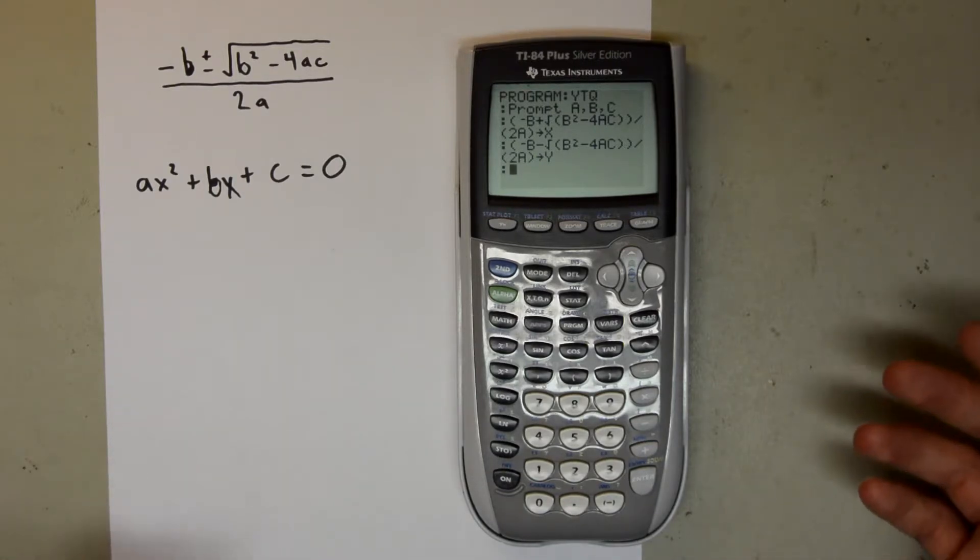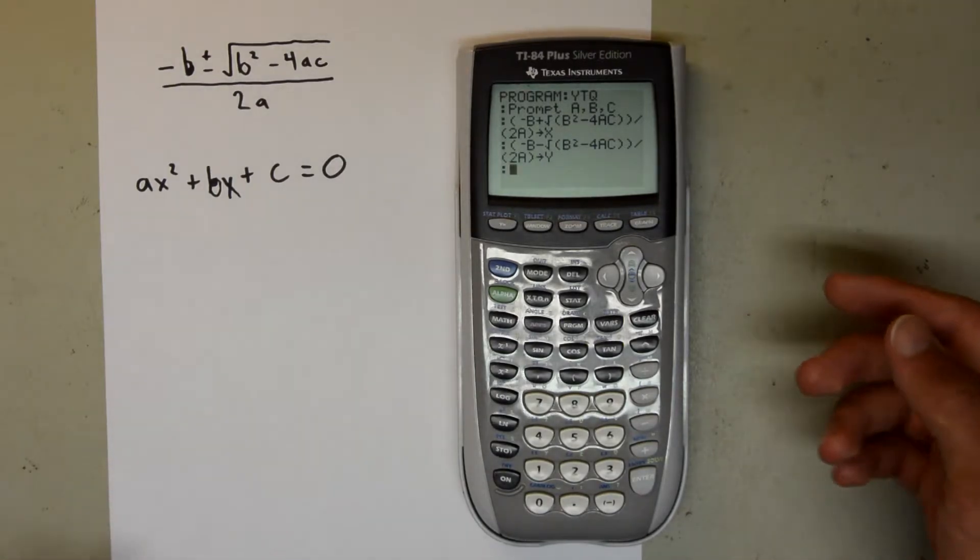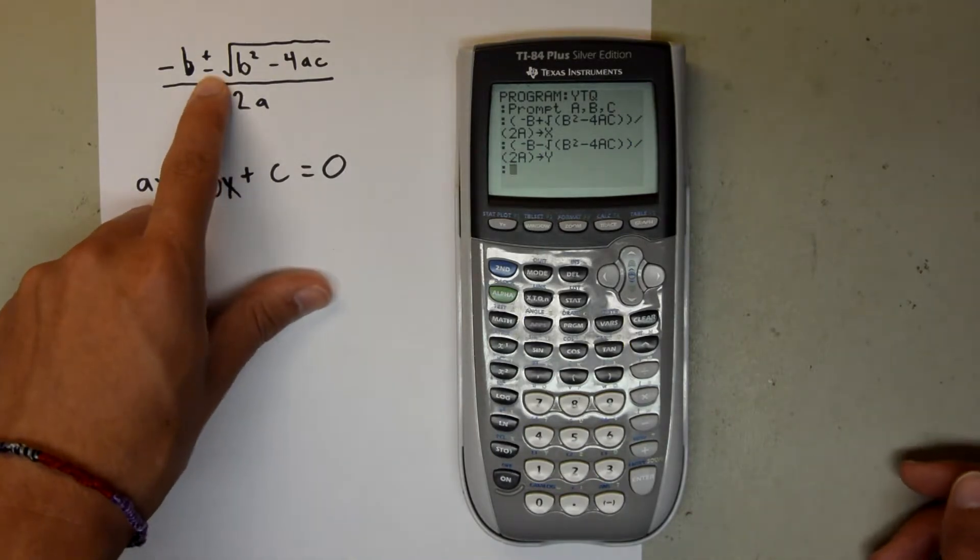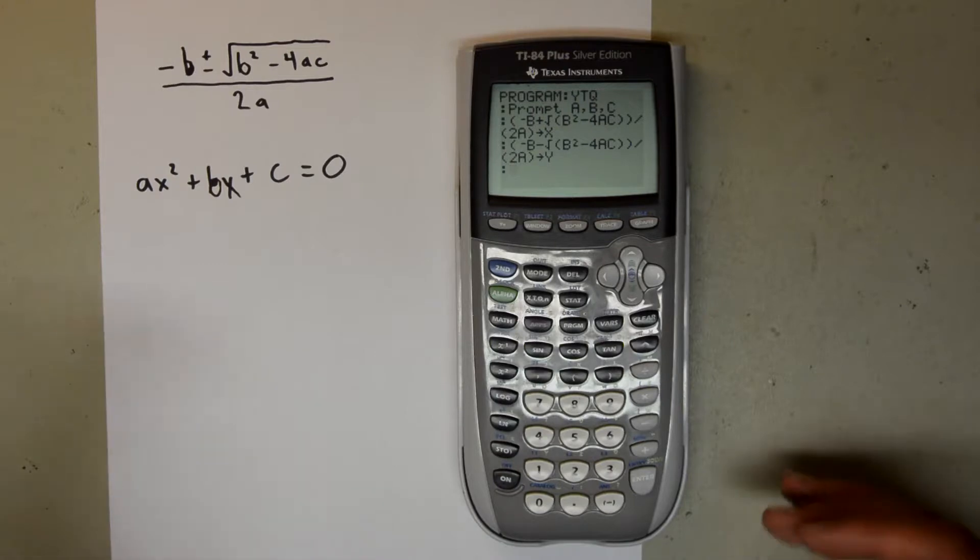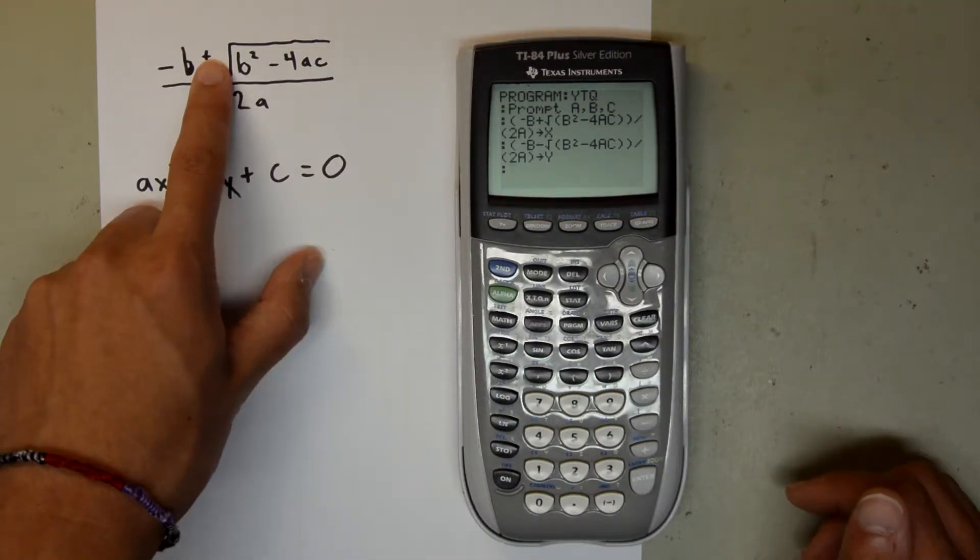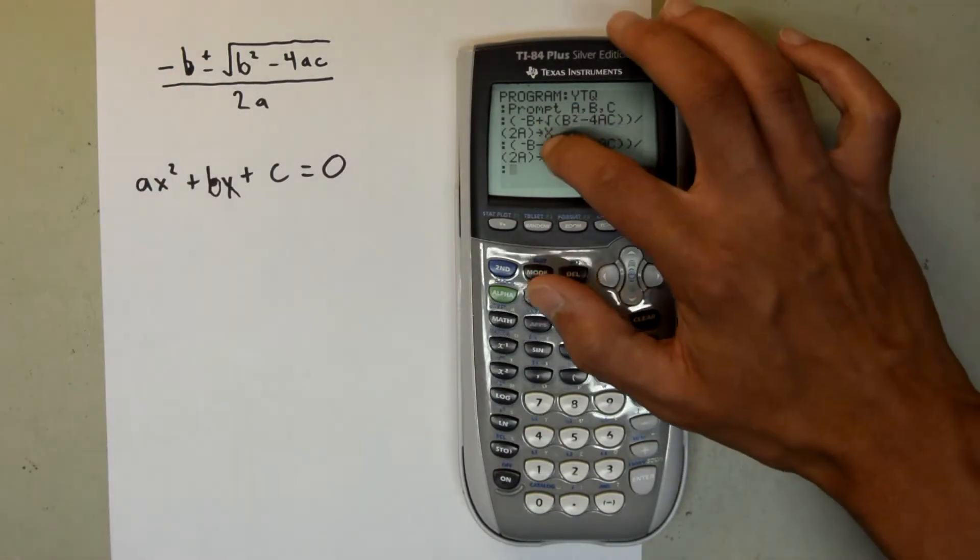So here we had to type the equation twice, changing only the plus or minus to account for the plus or minus right here in the quadratic formula. When you execute the program, it will give you two roots in the order XY, so the root with the plus will come before the root with the minus.